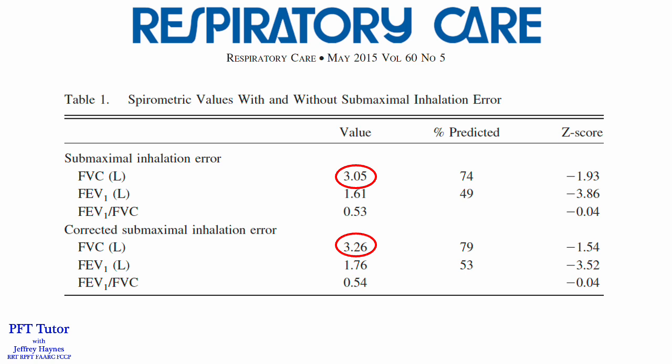The FEV1 was also affected by the submaximal inhalation error. When the error was present, the recorded FEV1 was 1.61. It increased by 150 mLs when the error was corrected, but remained markedly abnormal, with a Z-score of minus 3.52.